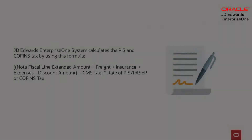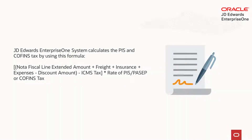The system uses this formula to calculate the PIS Tax and the COFINS Tax. It is the sum of nota fiscal line extended amount, freight, insurance, and expenses minus the discount amount. ICMS Tax is deducted from this amount and the resulting amount is multiplied with the rate of PIS or COFINS Tax.